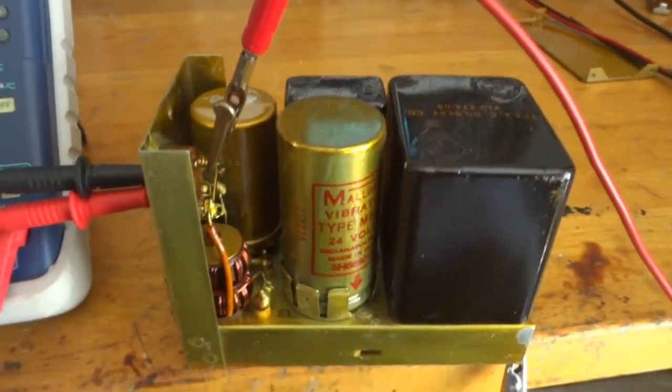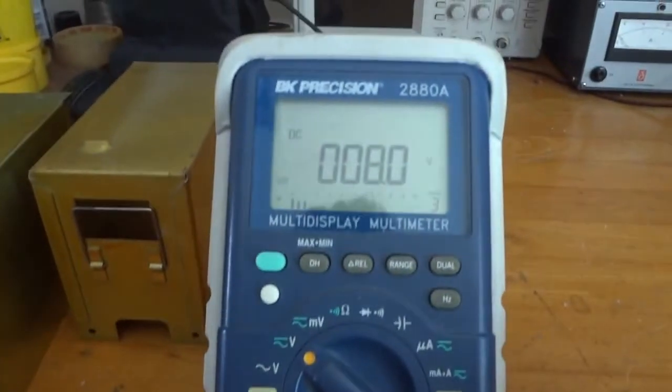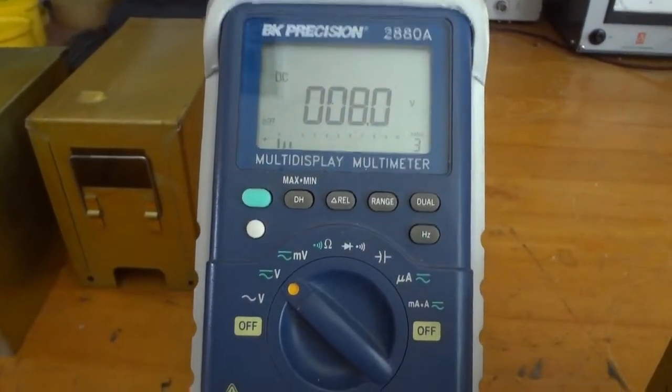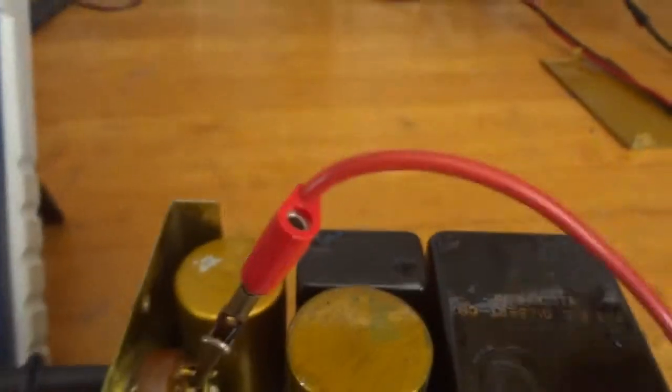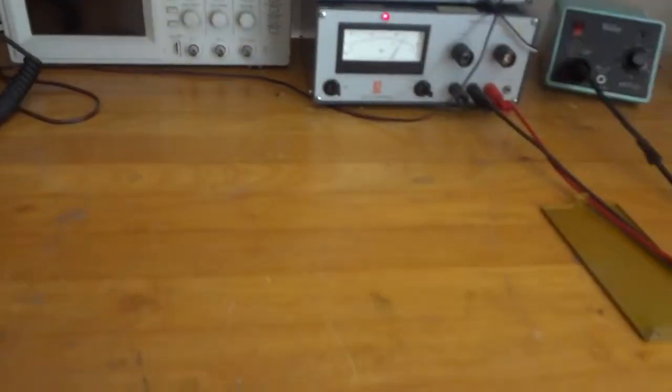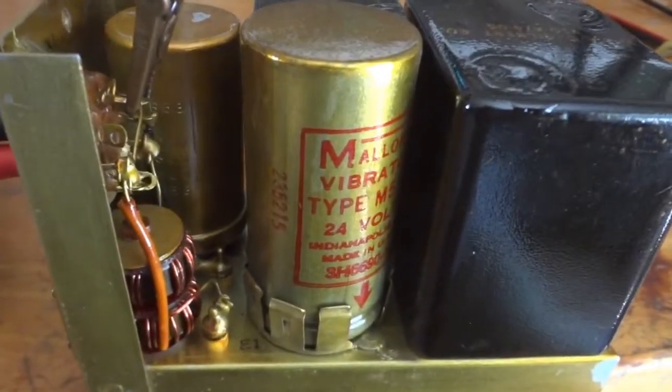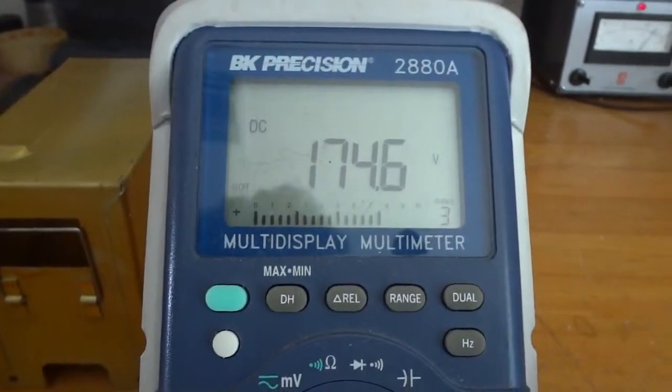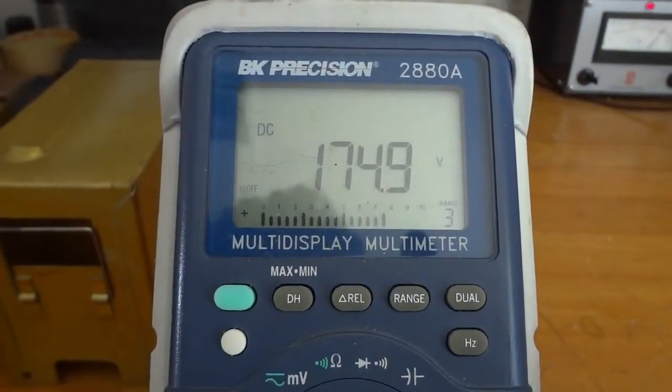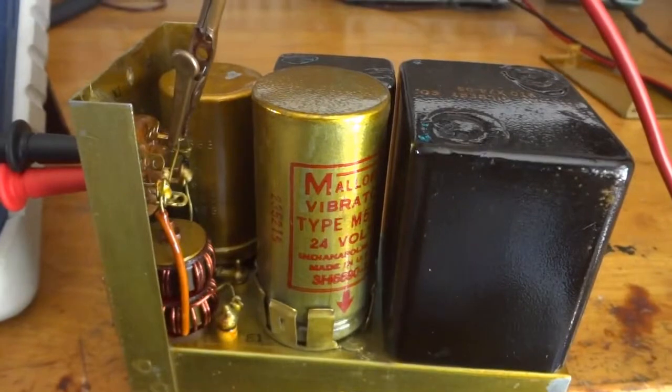Alright we have it hooked up. 24 volts coming from these power supplies over there and we have a voltmeter that shows us how much we're going to get. Right now there is still eight volts left in the electrolytic capacitor. Let's turn it on. You can hear the vibrator humming. The voltage we get from the power supply is 175 volts. It jumps a little bit. Let's now have a look at the oscilloscope picture.